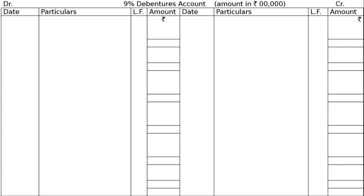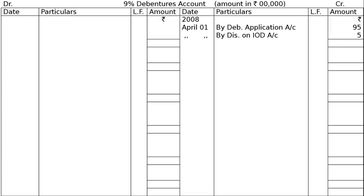The first entry is bank to debenture application account — Rs 95 lakhs, both debit and credit. The next entry is debenture application account debited Rs 95 lakhs, discount on issue of debentures account debited Rs 5 lakhs, to 9% debentures account. In the 9% debentures ledger, the posting on 1st April 2008 is: by debenture application account Rs 95 lakhs, by discount on issue of debentures account Rs 5 lakhs.